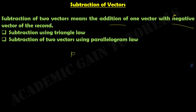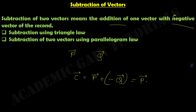Suppose P and Q are two vectors and we want to find the difference C of P and Q. Then we can write this as P minus Q. This is known as subtraction of vectors.